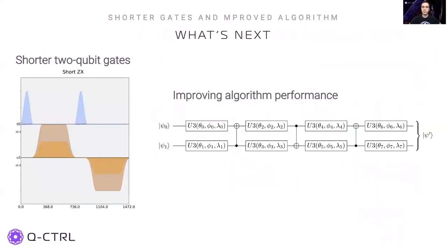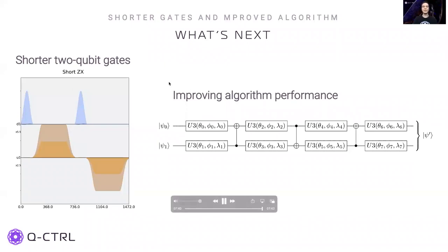We also evaluated the same pulses using interleaved randomized benchmarking. According to this measure, the average error per gate of the optimized pulse is 30% better than the default. After demonstrating that we can generate optimized two qubit gates with reinforcement learning, we want to explore other possibilities like making them shorter. This poses unique challenges to model-based methods, as the pulse amplitude may enter a regime where assumptions about the physical model break down. Reinforcement learning can deal with this situation. Another goal is to use the optimized pulse to show improved performance in an algorithm. Thank you for your attention.